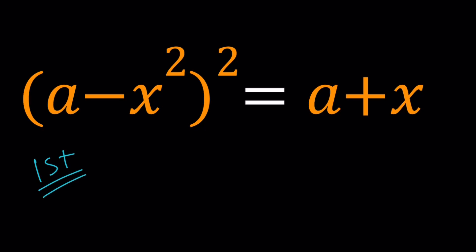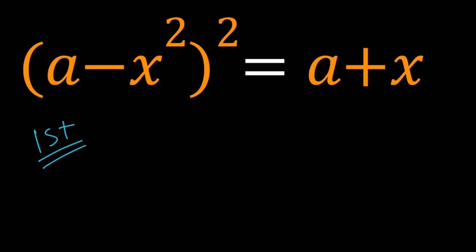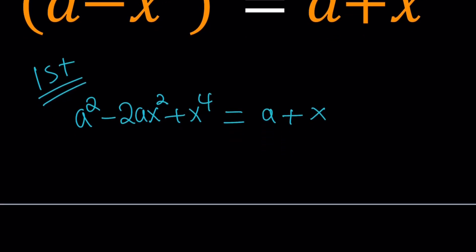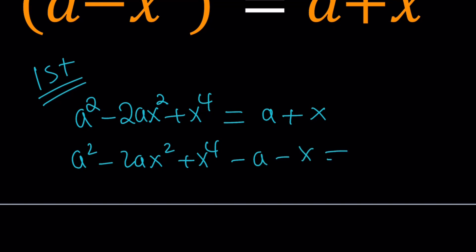First method: I'm going to expand everything. That's going to give me a squared minus 2ax squared plus x to the fourth equals a plus x. Now let's go ahead and put everything on the same side: a squared minus 2ax squared plus x to the fourth minus a minus x equals zero.